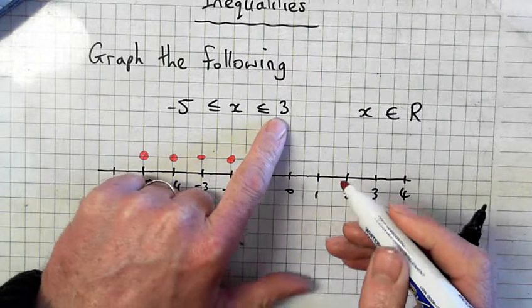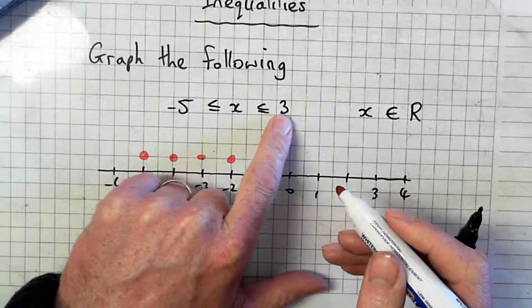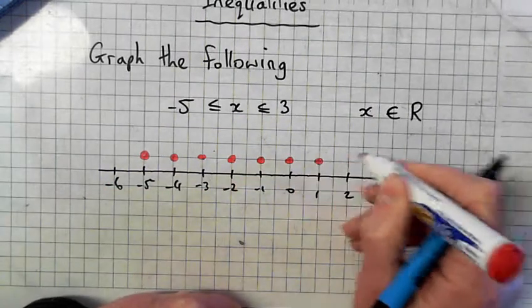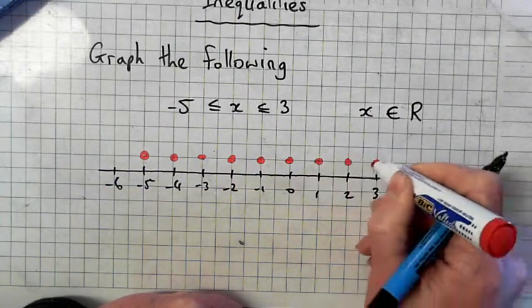And this time, can I include 3? Yeah. x is equal to 3. x is also less than 3. Yeah.